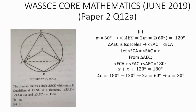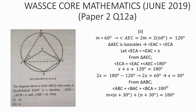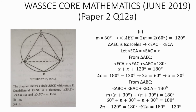Dividing both sides by 2, x equals 30 degrees. From triangle ABC, angle ABC plus angle BCA plus angle BAC equals 180 degrees. Angle ABC is m, and each of the other angles is m plus 30 degrees. Since m equals 60 degrees, we substitute: 60 plus n plus 30 plus n plus 30 equals 180 degrees, giving us 2n plus 120 degrees equals 180 degrees.